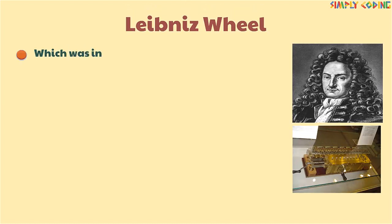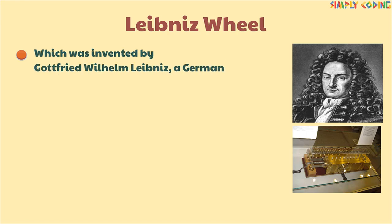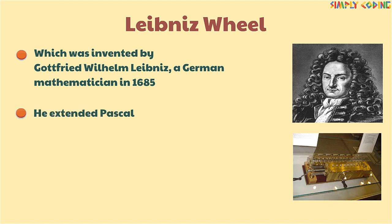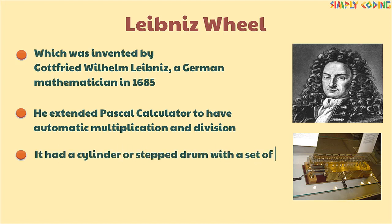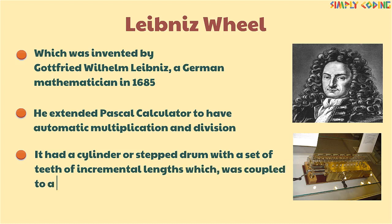Next was Leibniz's Wheel, which was invented by Gottfried William Leibniz, a German mathematician, in 1685. He extended Pascal's calculator to have automatic multiplication and division. It had a cylinder or step drum with a set of teeth of incrementing lengths, which was coupled to a counting wheel.